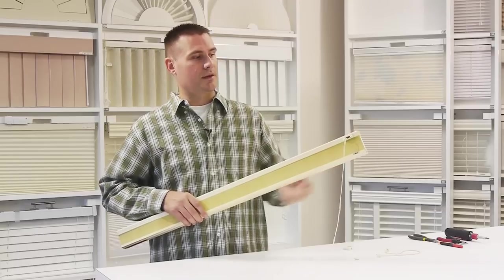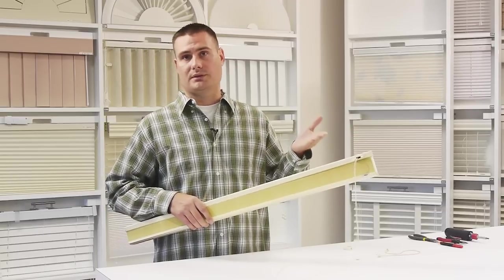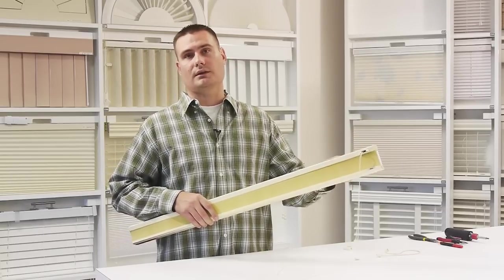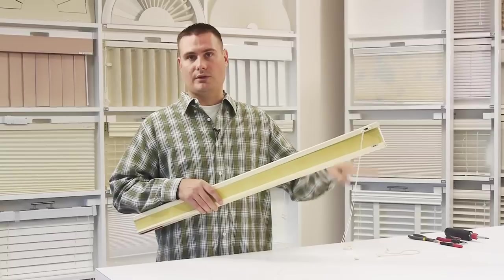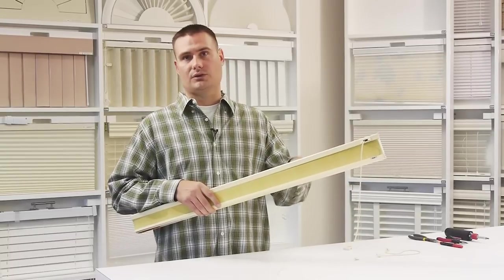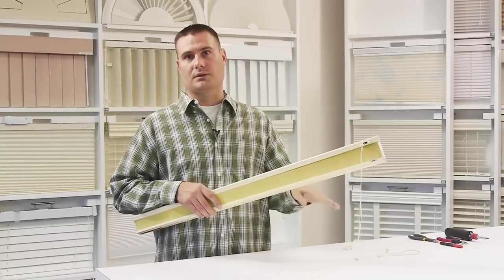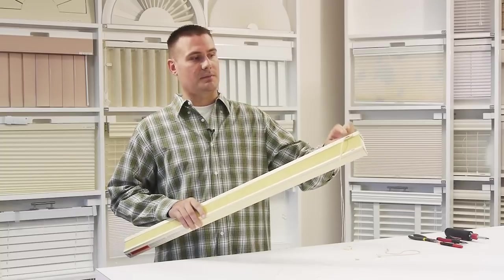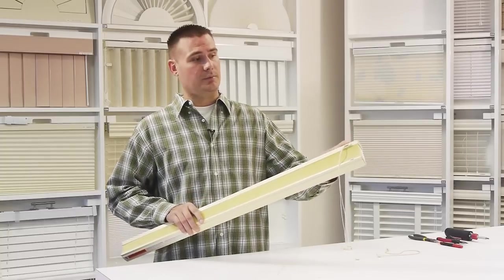You'll know that your cord lock is failing if you raise your shade to a particular height and lock it, and if one side of the shade gradually lowers or if the entire shade continues to lower once it's in the lock position. That can just mean that this mechanism is faulty and you can actually replace this yourself.